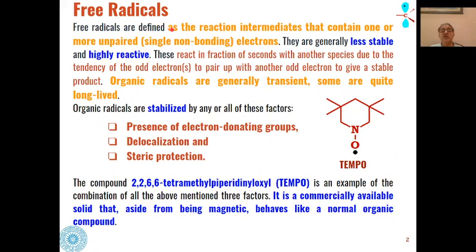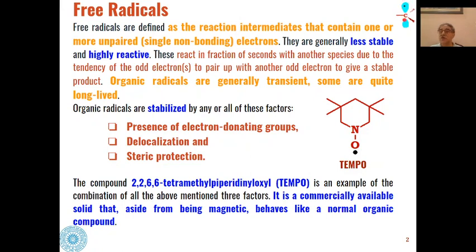Free radicals are defined as reaction intermediates that contain one or more unpaired, that is single non-bonding electrons. These species which have single electrons are called free radicals. They are very less stable and highly reactive because they have the tendency to take one more electron from any other species, or to lose or share this electron to become stable. They react in a fraction of seconds with another species due to the tendency of the odd electron to pair up with another odd electron to give a stable product.